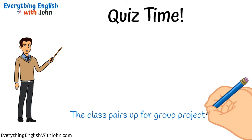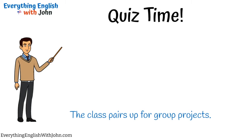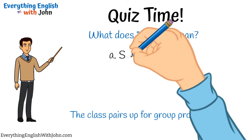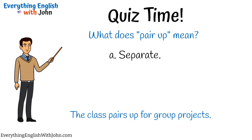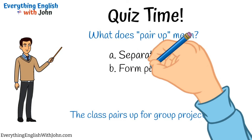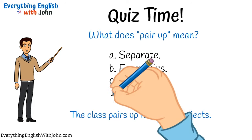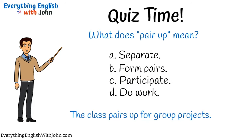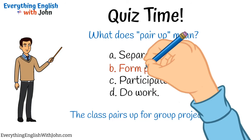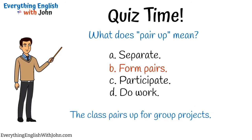The class pairs up for group projects. What does 'pair up' mean? A: Separate. B: Form pairs. C: Participate. D: Do work. That's right, it's B — Form pairs.